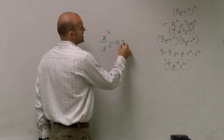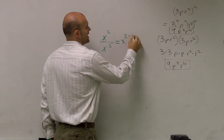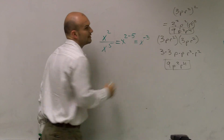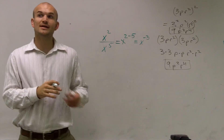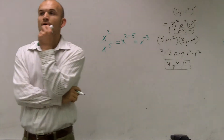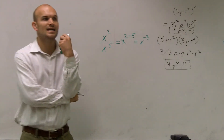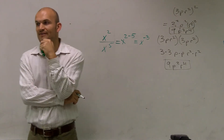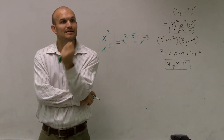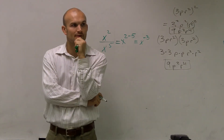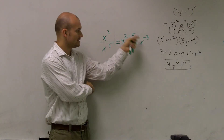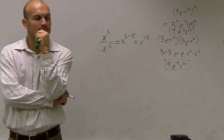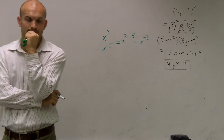Negative 3 — it gives us a negative number. So this gives us x to the negative 3. Now, ladies and gentlemen, one thing we talked about is that monomials cannot have a negative exponent. They have to be written with a positive exponent. So how do we write a negative exponent as a positive exponent?